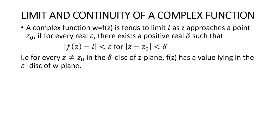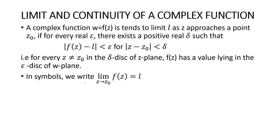That is, for every z not equal to z0 in the delta disk of the z-plane, f has a value lying in the epsilon disk of the w-plane. In symbols, we write: limit as z tends to z0 of f(z) is equal to l.